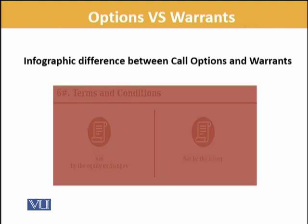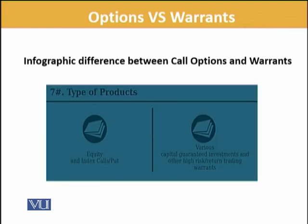Terms and conditions can be very different from other issues. In terms of types of products, options include equity, index, call, and put options. Warrants include various capital-guaranteed instruments or high-risk trading warrants, which can also be traded in the market. These are very specific products.